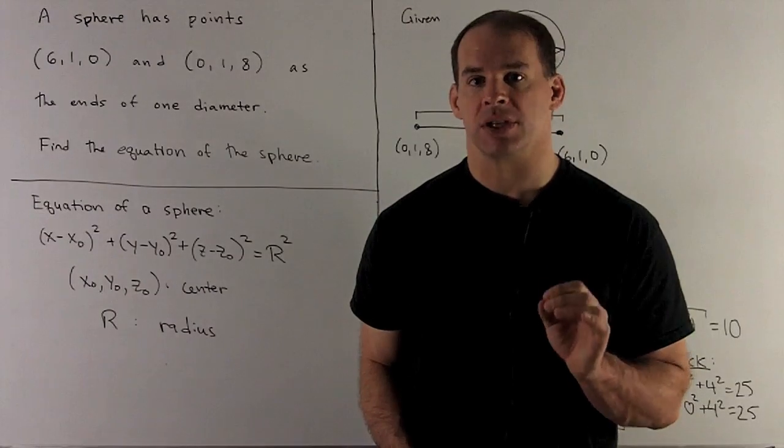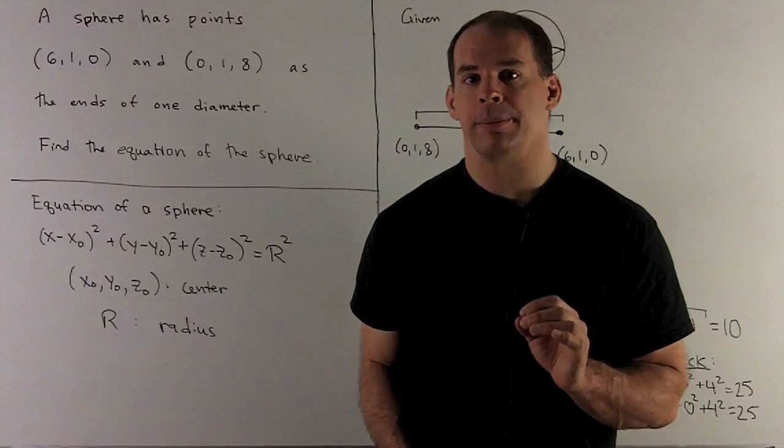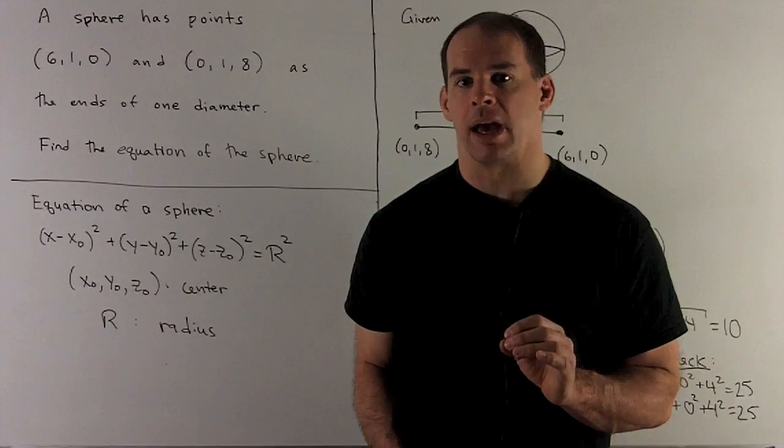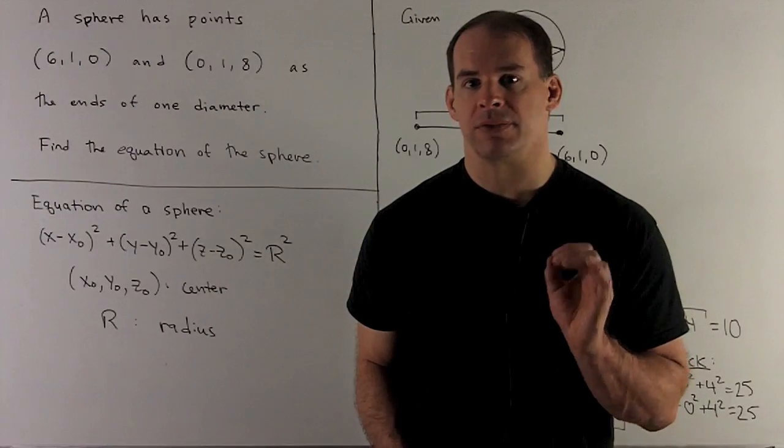A sphere has points (6, 1, 0) and (0, 1, 8) as endpoints of one diameter. Find the equation of the sphere.